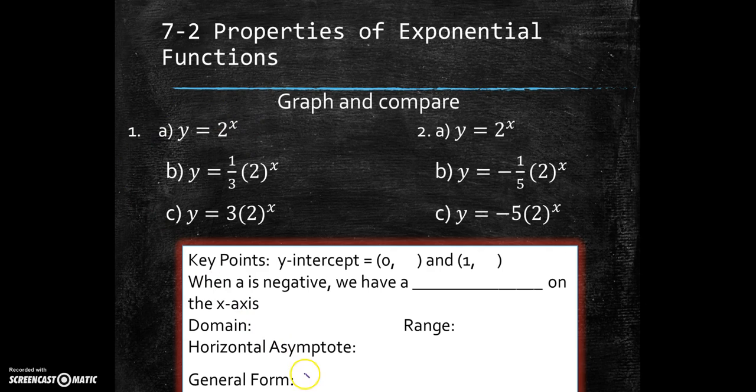So what we saw from these first ones, when we have the general form y equals a times b to the x, the y-intercept is always going to be at 0, a, and the 1 value is always going to go through a, b, a times b. It makes sense to me because if the x is 0, then I can just plug in 0 for x, and then b to the 0 is 1, a times 1 is a. That's delightful. And then the same thing for if the exponent here is 1, then it's just a times b to the first power. That's just a times b. So we just have to remember to plug in x equals 0 and x equals 1. Those are the two easy numbers to plug in.